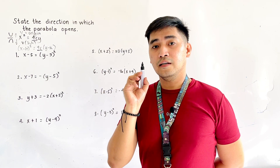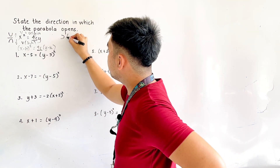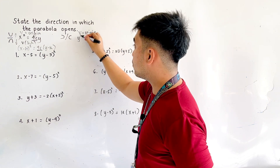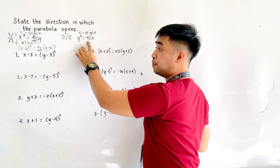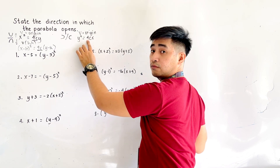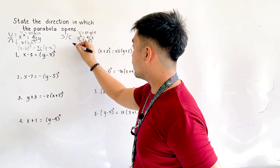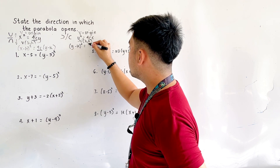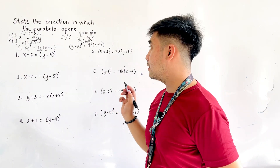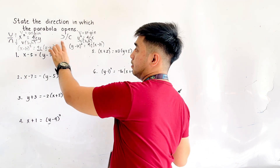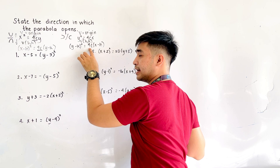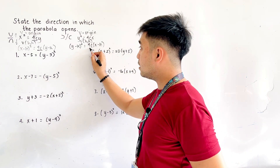If it opens to the left or to the right, we use the form with y squared. With vertex at the origin, the standard equation is y squared is equal to 4cx. If the vertex is at h,k, it becomes y minus k quantity squared is equal to 4c times x minus h. If the right side is negative, it is opening to the left. If the right side is positive, it is opening to the right.